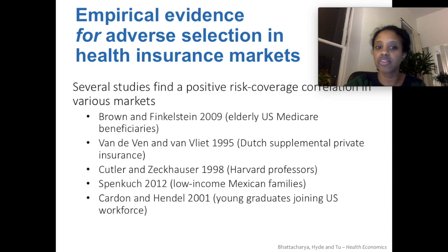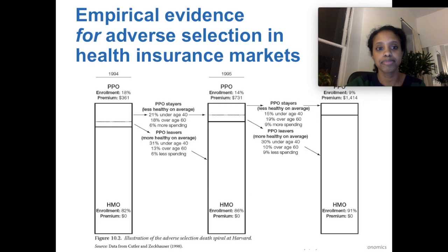There are actually a lot of studies that show a positive risk-coverage correlation in a variety of insurance markets. One of those in particular also finds evidence of an adverse selection death spiral.